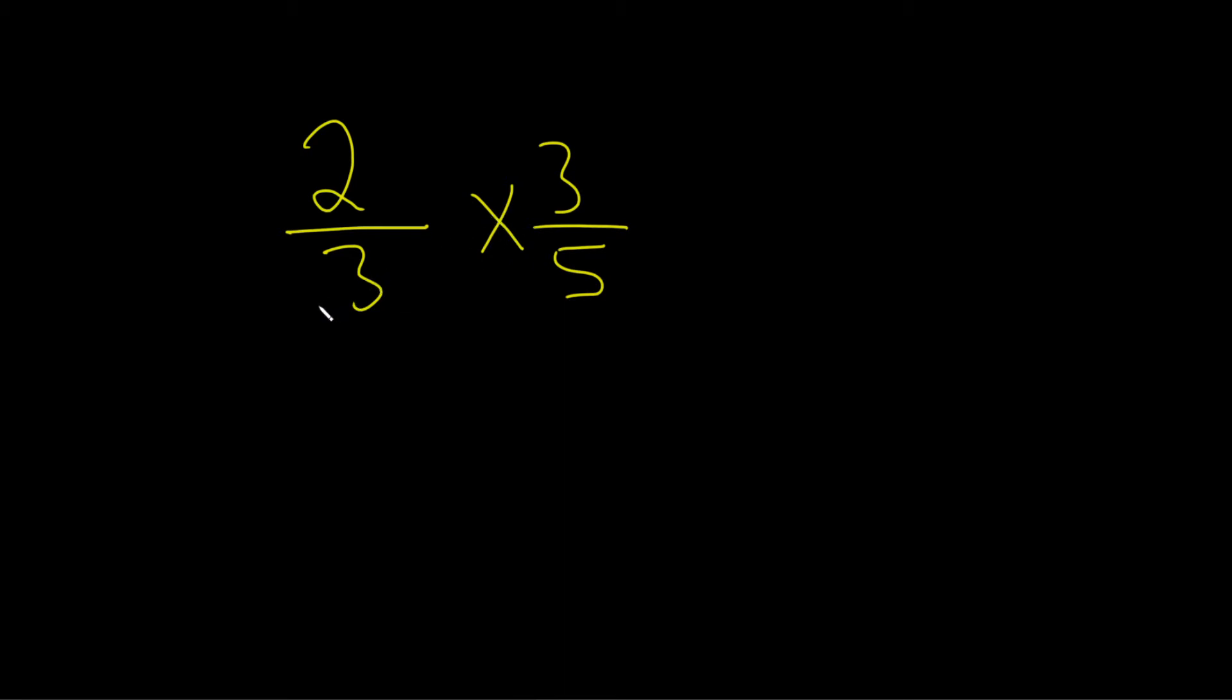So here we have a 3, so this 3 can cancel with this one. And so this can be written now as 2 over 1 times 1 over 5.